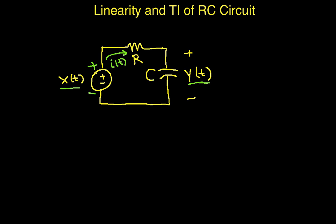And then we can get an expression for i(t) flowing through the resistor. That's the voltage across the resistor, which would be x(t) minus y(t). So the voltage across the resistor divided by the resistance.